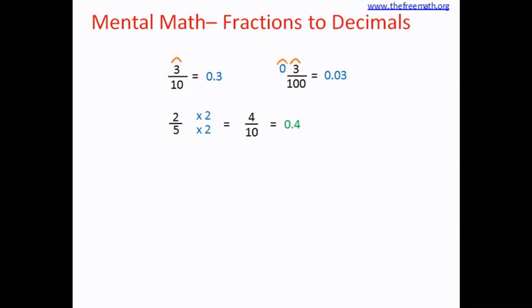If the fraction is 17 over 20, you make the denominator 100. So multiply the numerator and the denominator by 5. So you get 85 over 100, which is 0.85.